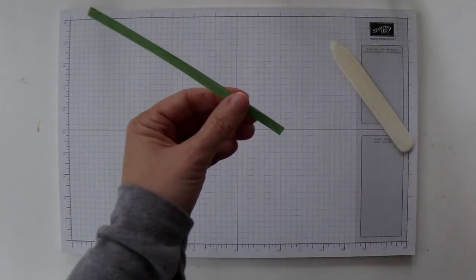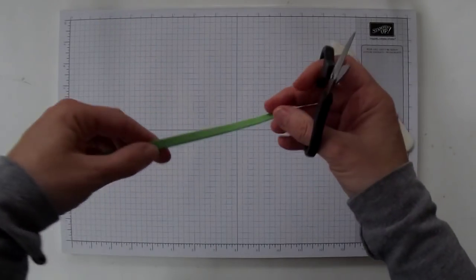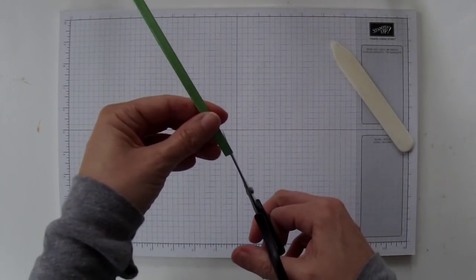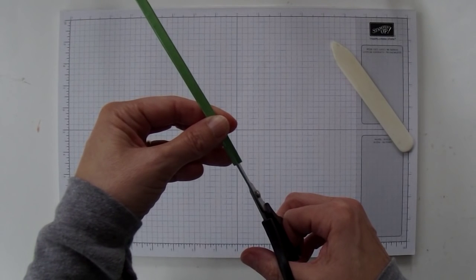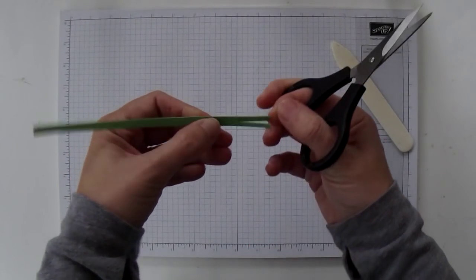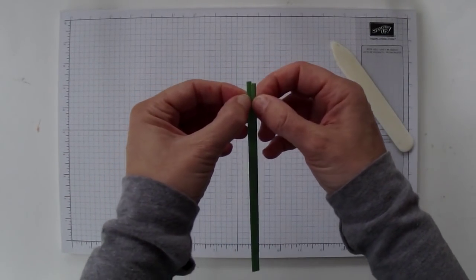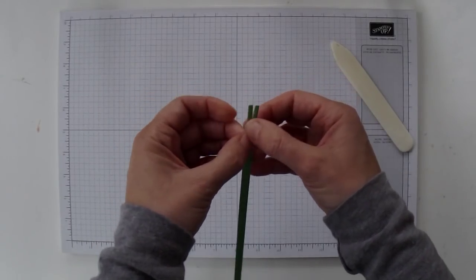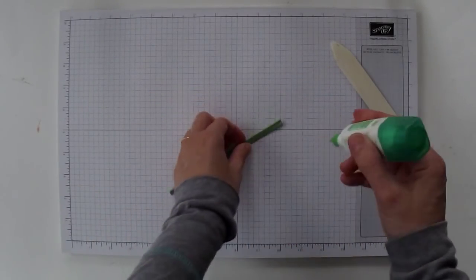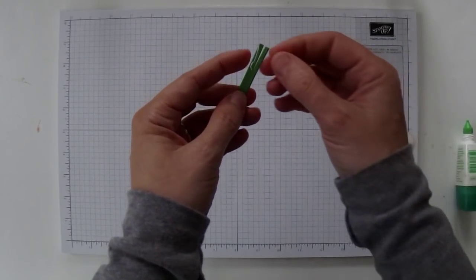And then you're going to choose one end and cut into it about three quarters of an inch down. That's probably more like an inch but just so you get a long enough slot. We are going to bring these together and create a narrow point at one end of your stem so that's where your flower head will go.